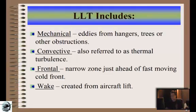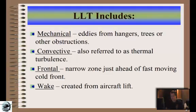Convective turbulence falls back to the heat — surface heating, thermals. Anytime that's involved, it means thermal or ground heating. Frontal turbulence is a narrow zone just ahead of a fast-moving cold front, and there's a famous number here: 30. Winds usually greater than 30 knots — any front moving at 30 knots or more — hence the 30 again — you can have frontal turbulence. And wake turbulence is created from other aircraft.